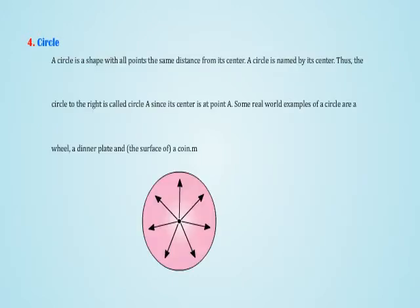4. Circle: A circle is a shape with all points the same distance from its center. A circle is named by its center. Thus, the circle to the right is called circle A since its center is at point A. Some real world examples of a circle are wheel, a dinner plate, and the surface of a coin.